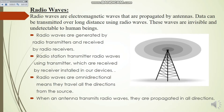First is radio waves. Radio waves are electromagnetic waves that are propagated by antennas — meaning signals are transferred with the help of antennas. Data can be transmitted over a long distance using radio waves. These waves are invisible and undetectable to human beings. Radio waves are generated by a radio transmitter and received by radio receivers. Radio stations transmit radio waves using transmitters, which are received by receivers installed in all devices.